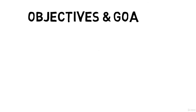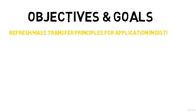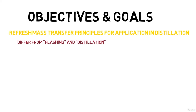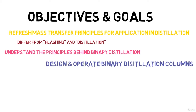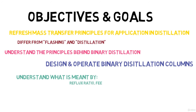The main objectives and goals for this course are: first, refresh and review mass transfer principles that will be used in the application of distillation processes. Second, we want to understand flash distillation versus continuous distillation and batch distillation. Then we're going to cover the basic principles behind binary distillation, and start designing and understanding how to operate binary distillation columns. It's very important to understand what is meant by reflux ratio, feed, feed tray, distillate, bottoms, distillate to feed ratio, and tray efficiencies.